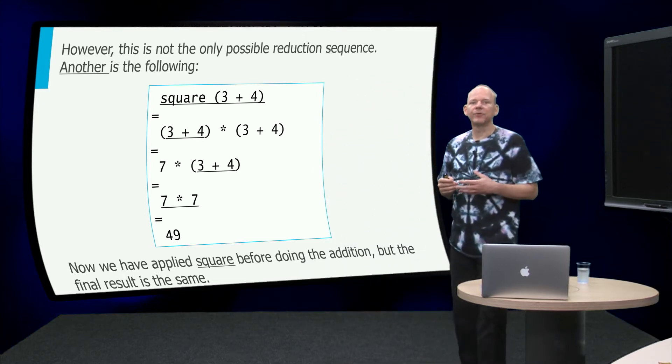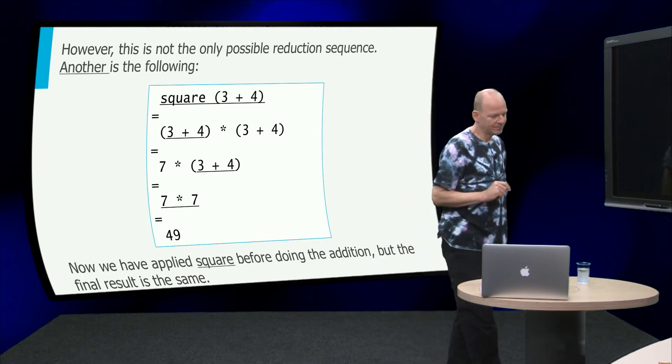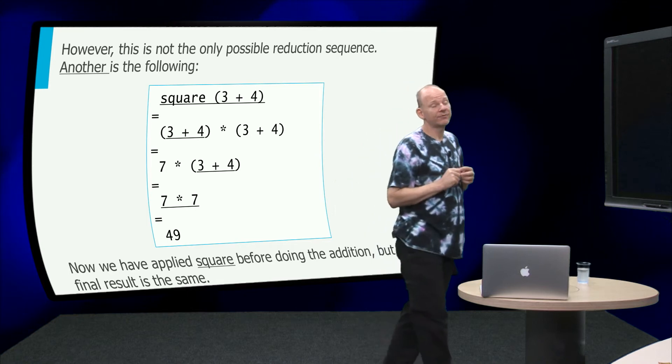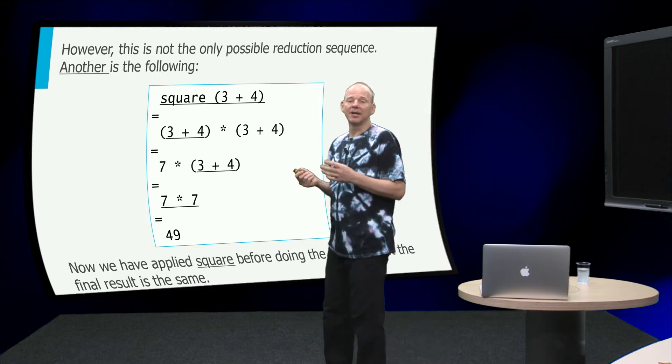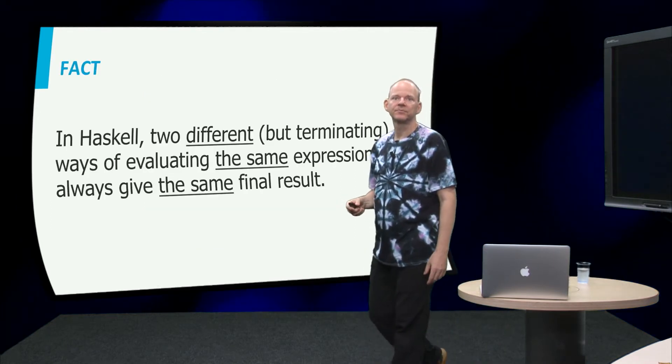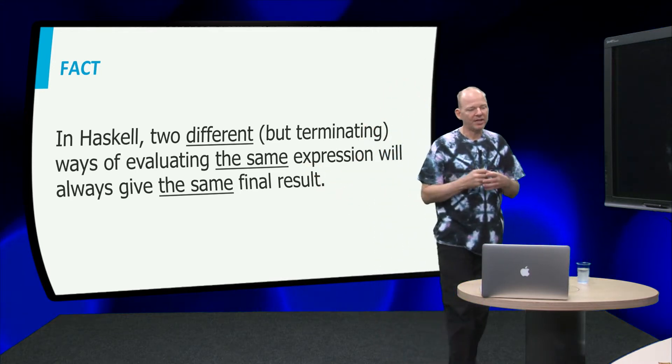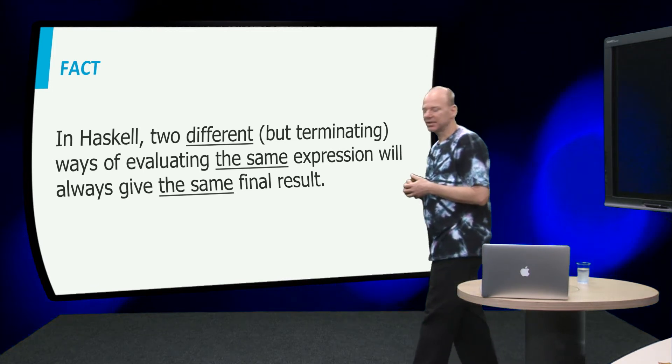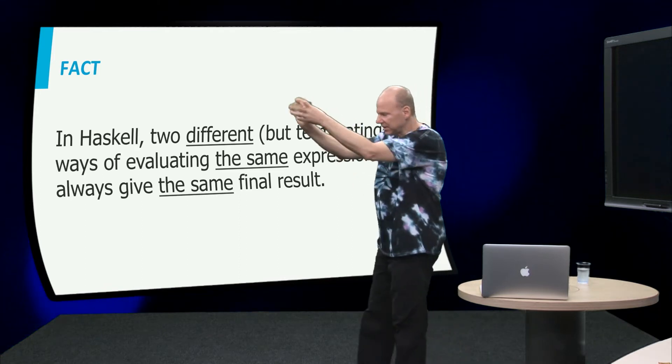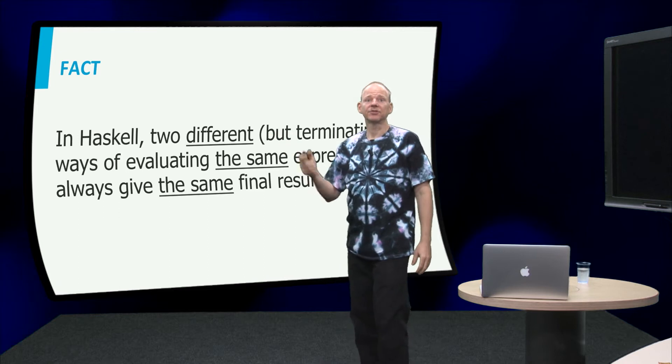So in this case we have first applied square before doing the addition. But the nice thing is that the final result is the same. And now imagine that there were side effects in this code, well in that case, since we are doing the evaluation in different orders, the side effects might happen in different order, and the result might be different. But since we are here in the pure world, it doesn't matter in what order you do these reductions. So that's a fact about Haskell, that if there are two different ways that both terminate to evaluate the same expression, then these will always give the same final result. And that makes it also easy to kind of refactor Haskell programs, because you can always substitute and massage things independent of where they appear. And that's because of this property.